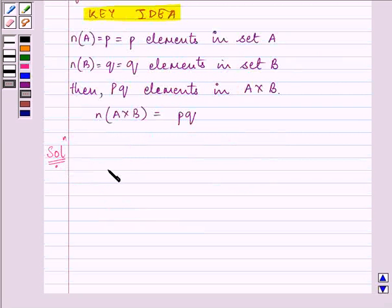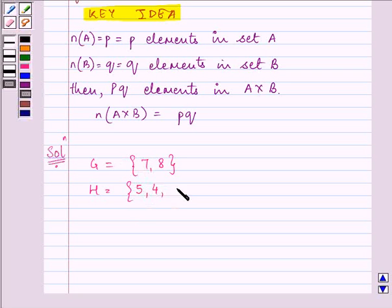Now, let us write down the elements in set G once again and elements in set H once again. To find out G cross H,